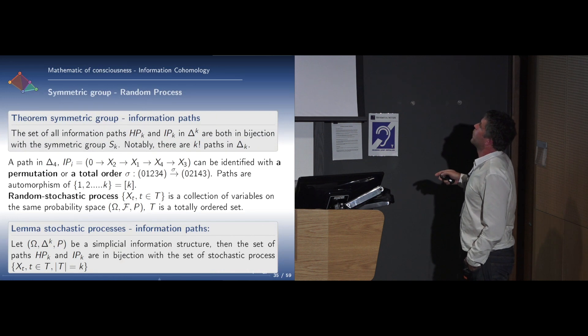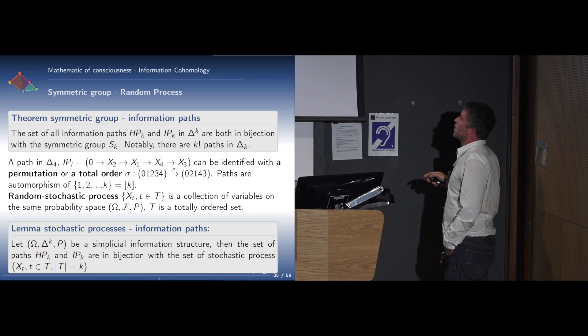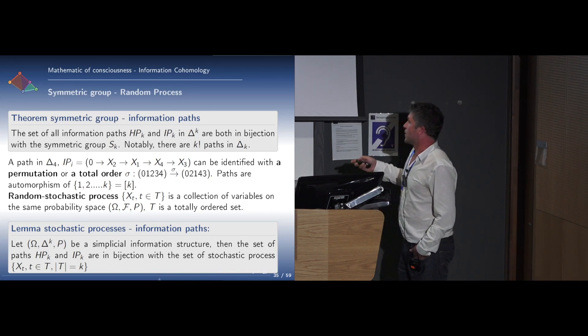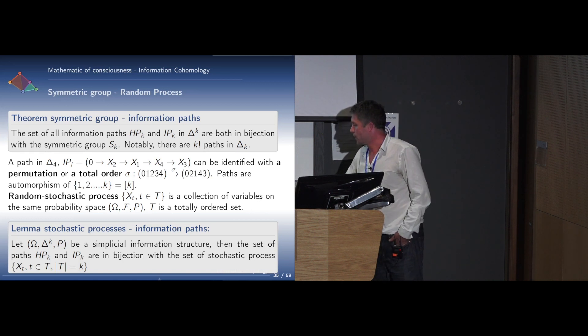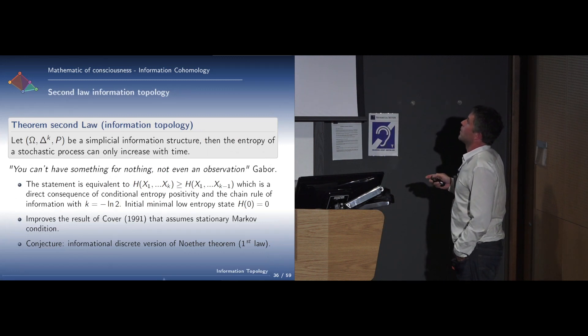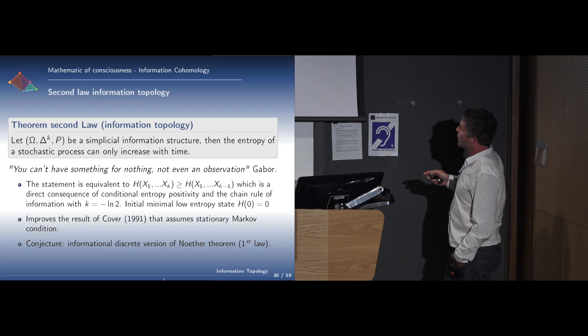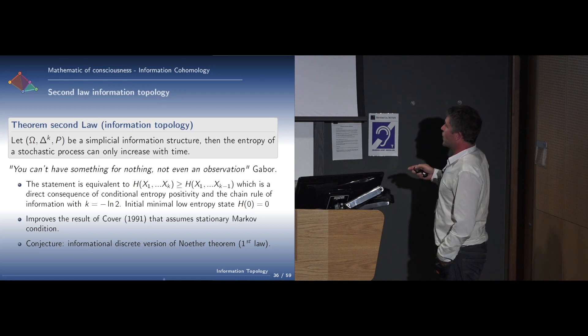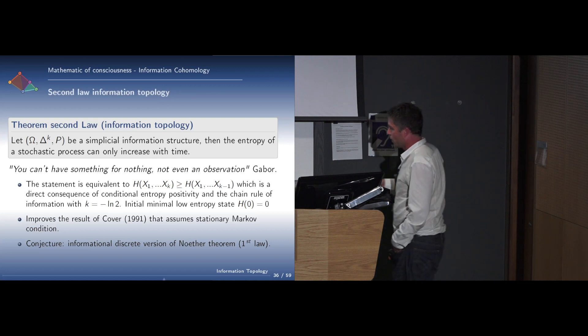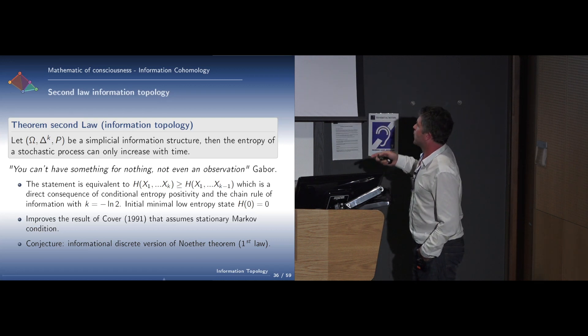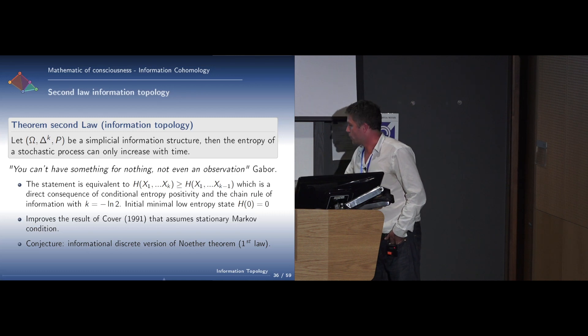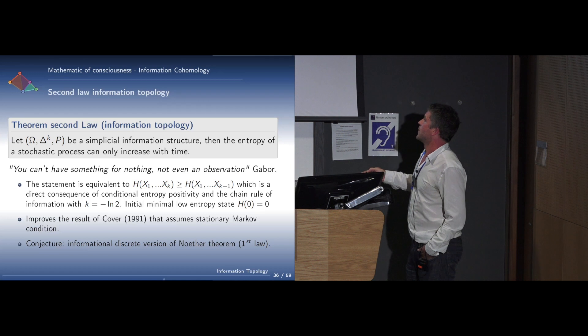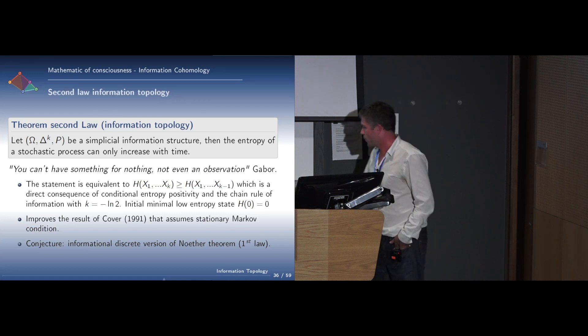We have the first nice theorem that the set of information paths is in bijection with the symmetric group, and we can see each path as a permutation. It's also in bijection with the set of stochastic processes, so we can see each path as a stochastic process. We have a trivial analog of the second law, which states that the entropy of a stochastic process can only increase with time, increasing the indices of the chain. This is basically a consequence of positivity of conditional information and convexity of logarithms. It improves the result of Cover that had to assume a Markov condition.